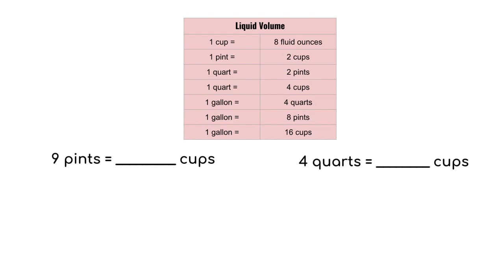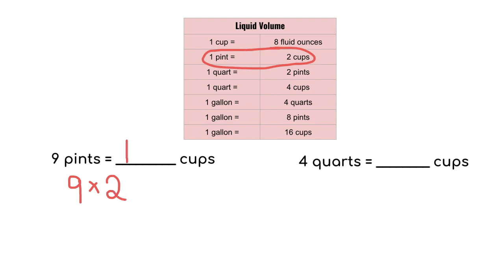Let's try two more. We have nine pints equals blank cups. So nine is our starting number. We're multiplying because we're going from pints to cups, larger to smaller units. We find the conversion that has pints and cups together, which is one pint equals two cups. So nine pints would be 18 cups.